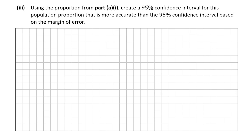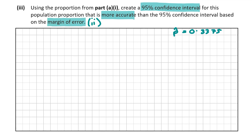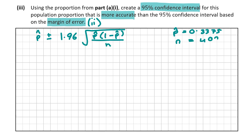Now let's move on to part A3, which asks us — using the proportion from part A1, which was 0.3375 — to create a 95% confidence interval that is more accurate than the one based on the margin of error. The formula we need is: P-hat plus or minus 1.96 multiplied by the square root of P-hat times (1 minus P-hat) all over n, where n is 400.